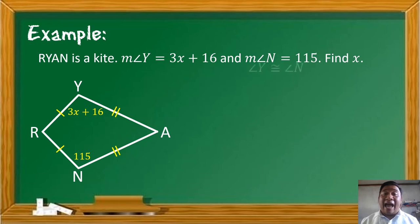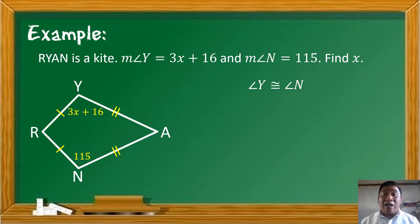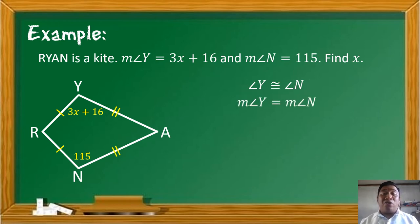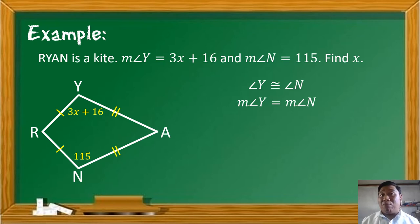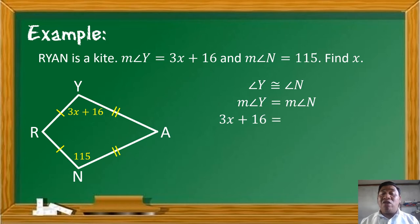Therefore, angle Y is congruent to angle N, meaning their measures are equal. We can say that the measure of angle Y equals the measure of angle N. Substituting the given values: 3X plus 16 is equal to 115.